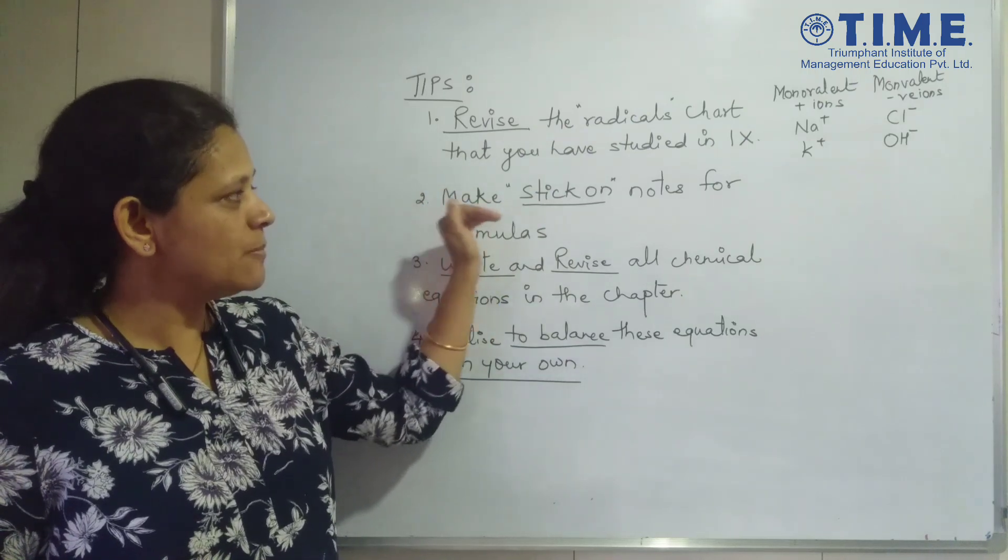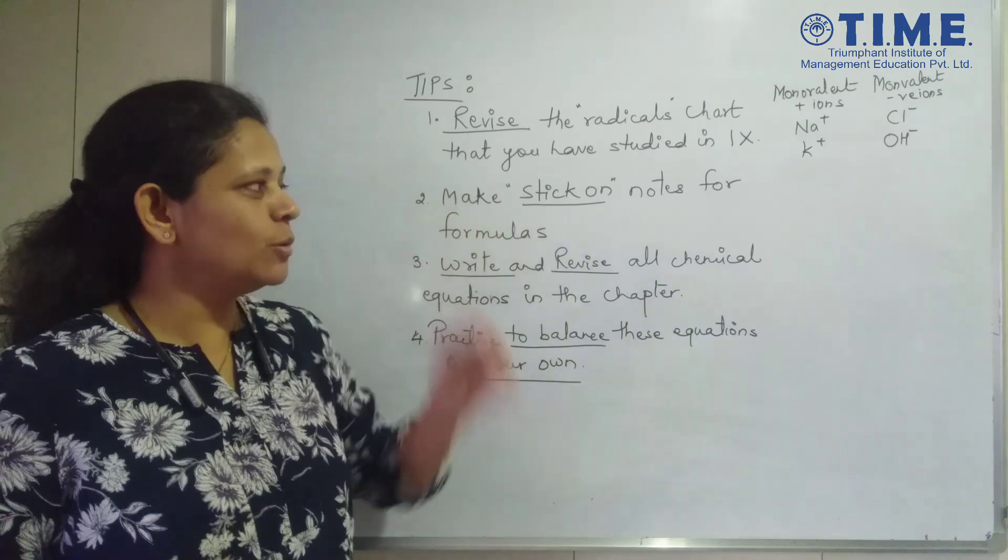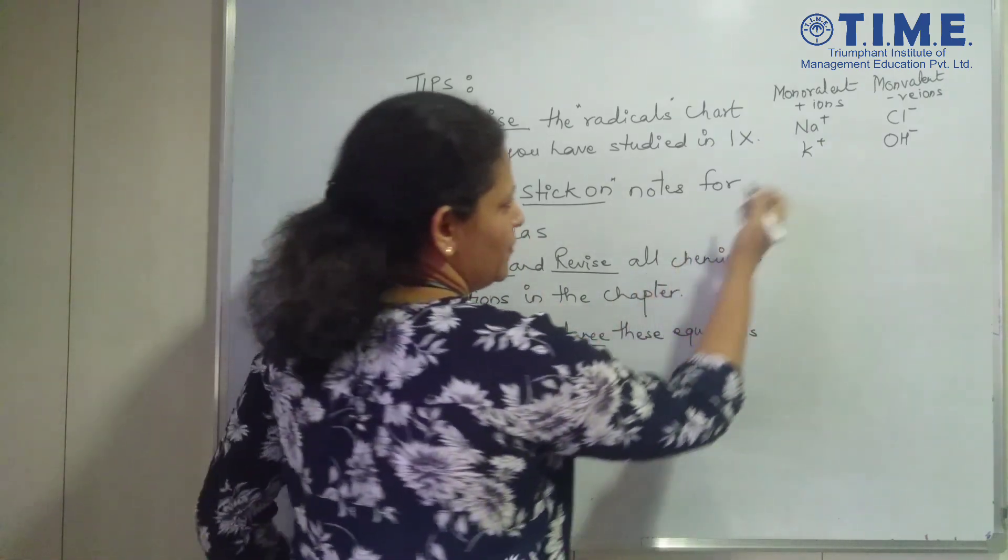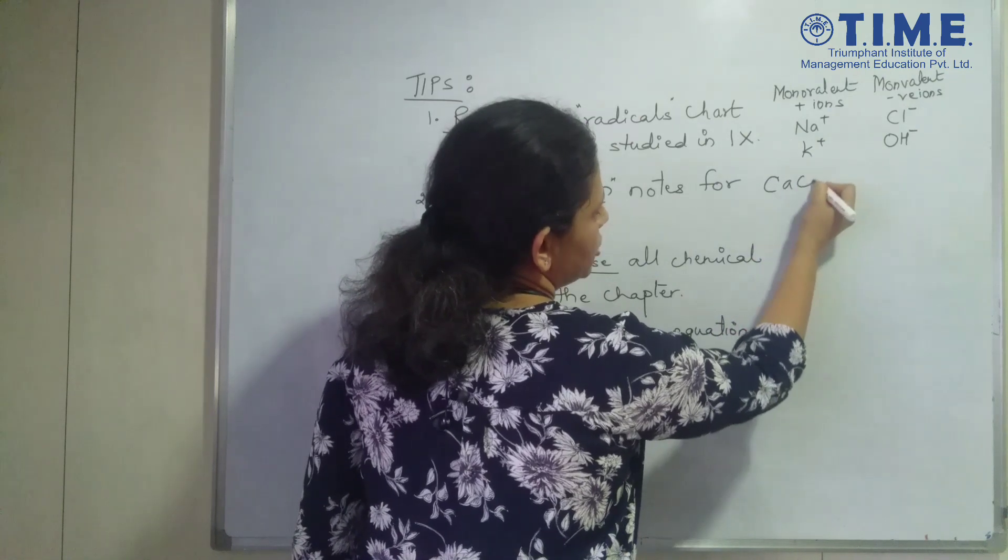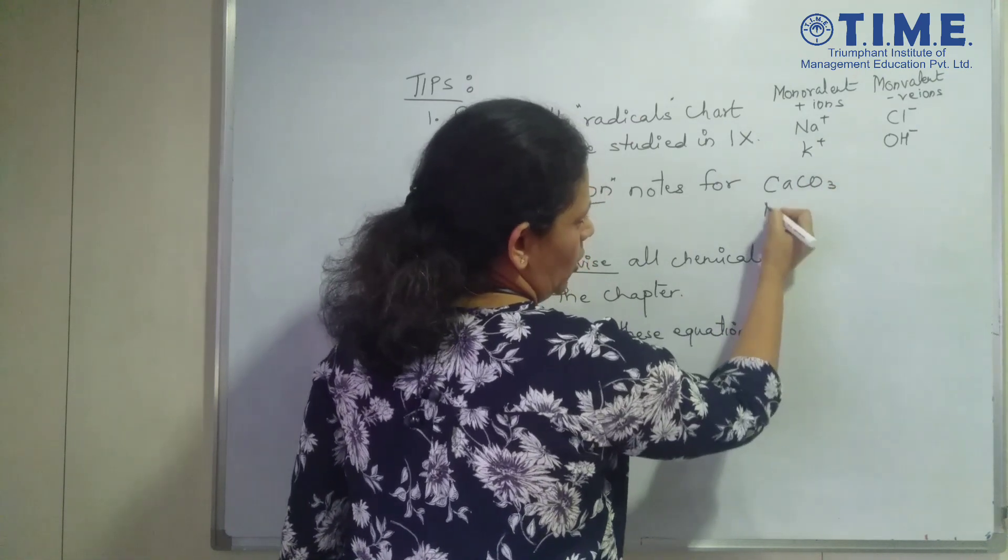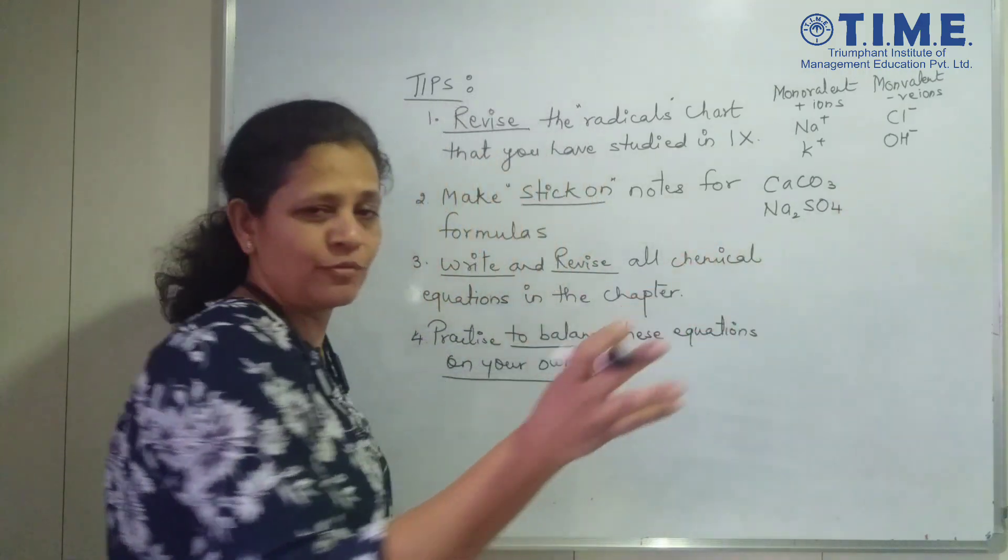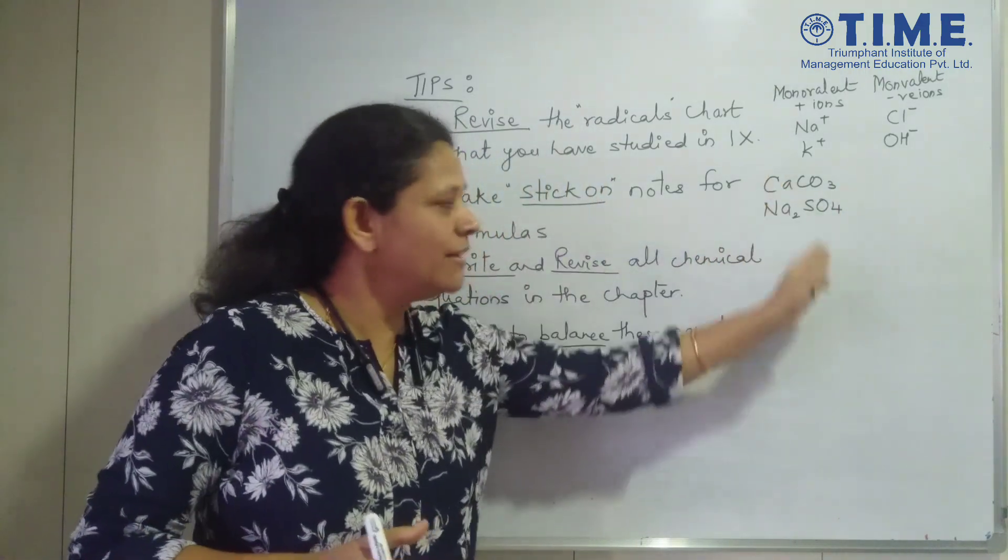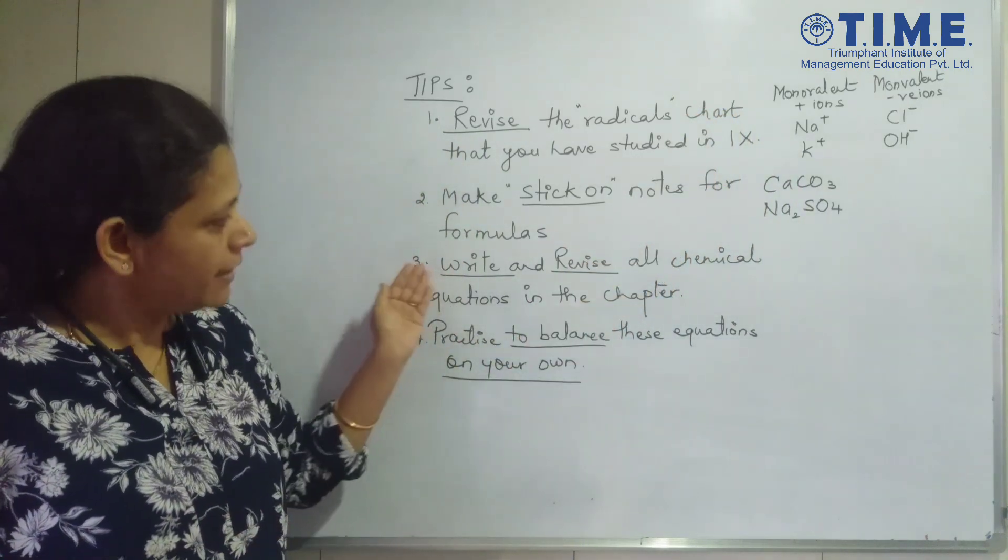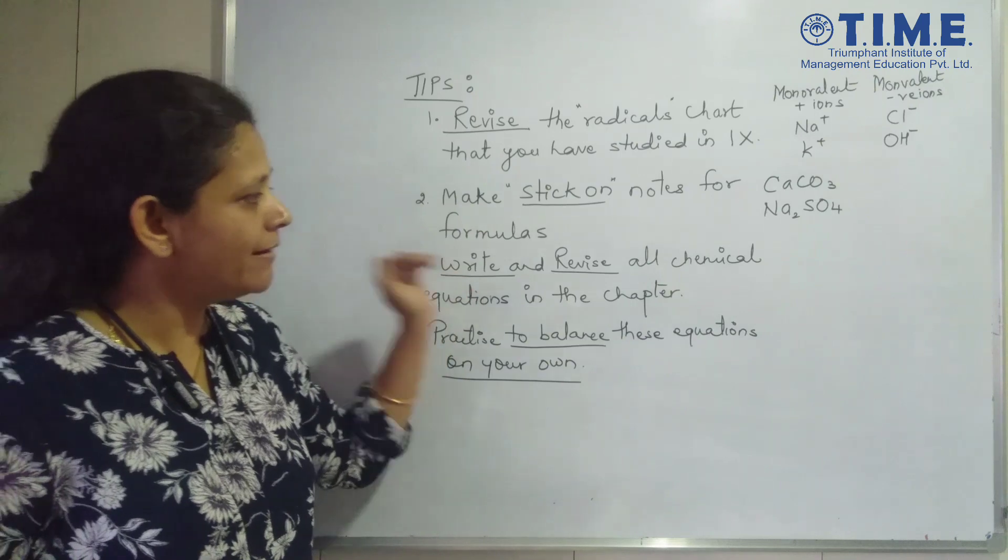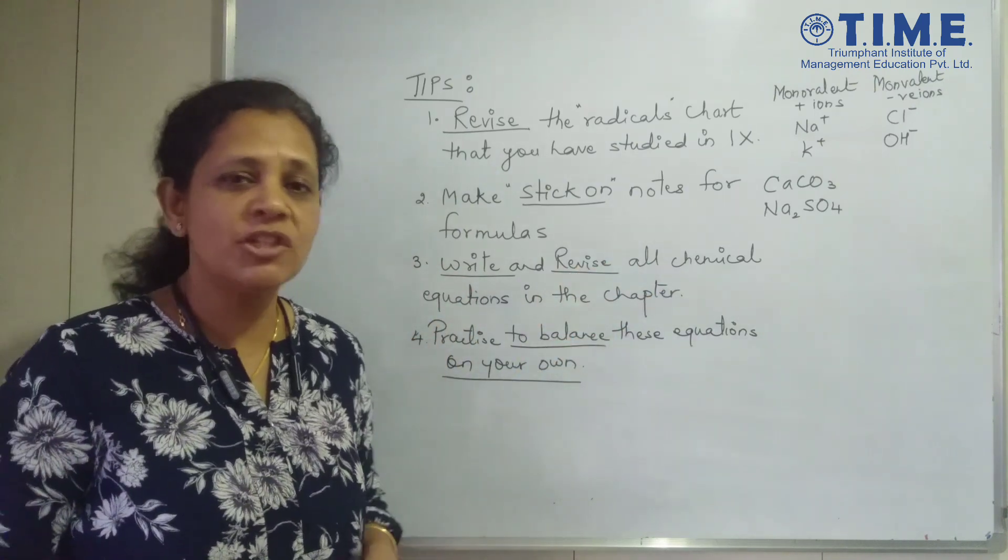Second important thing is make sticky notes. You have sticky papers on which you write the formula. For example, some of the common formulas you can write like calcium carbonate or sodium sulfate. Just stick it wherever you feel like all over your house and this will come handy whenever you are moving around.